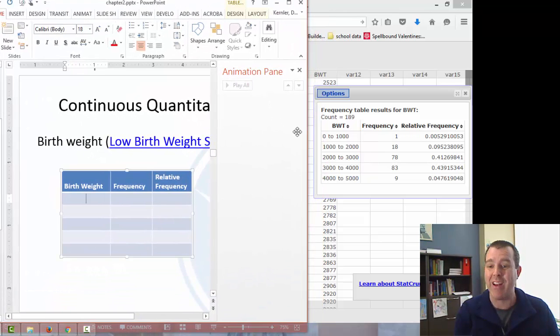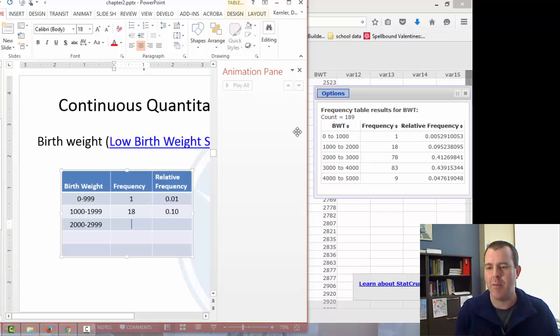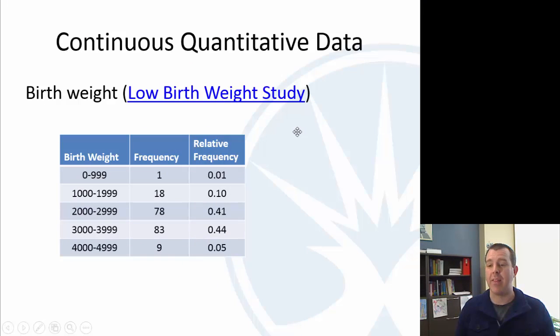So for our birth weight, we're going to do 0 to 999, frequency of 1, relative frequency 0.01. And then 1,000 to 1,999, frequency of 18, 0.10. So you can see now my categories are not overlapping. And that just makes it a little bit clearer about where those cutoff values belong. And the relative frequency here may add up to 1.01 or something like that, but that's okay. That's just due to rounding. If it adds up to 1.03, then you've made some rounding error or calculation error.